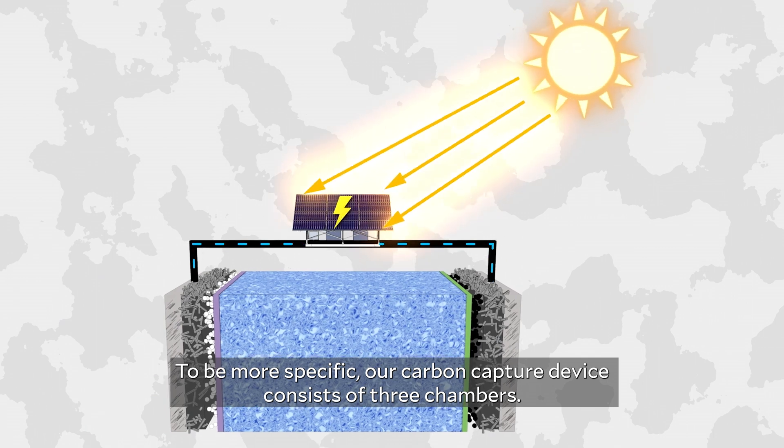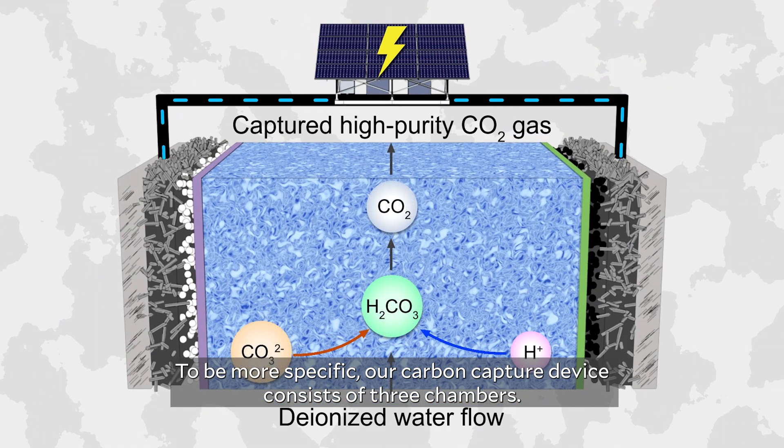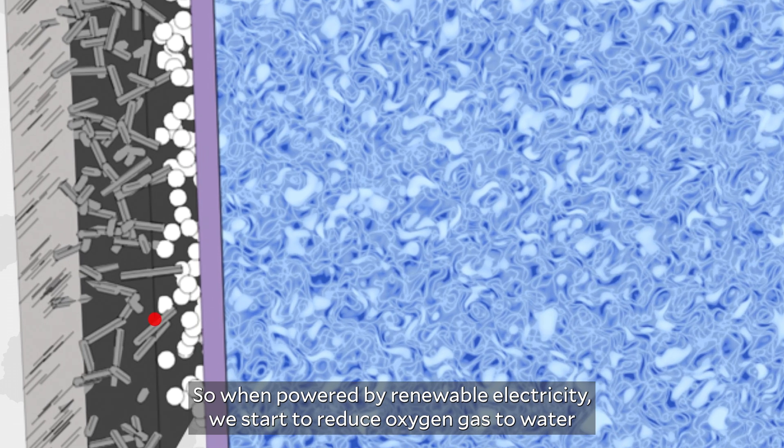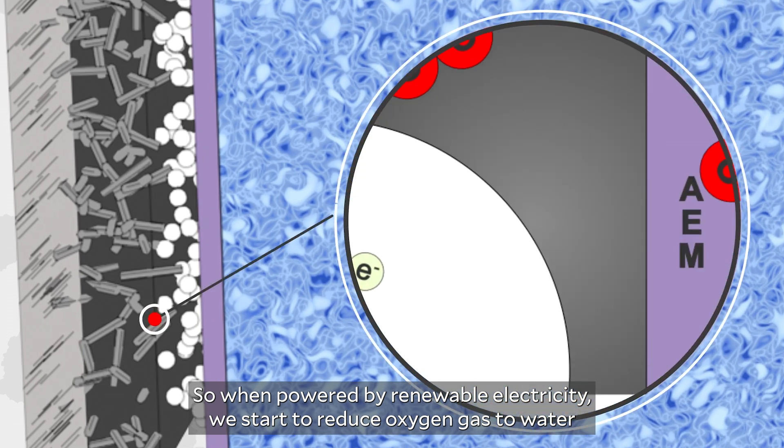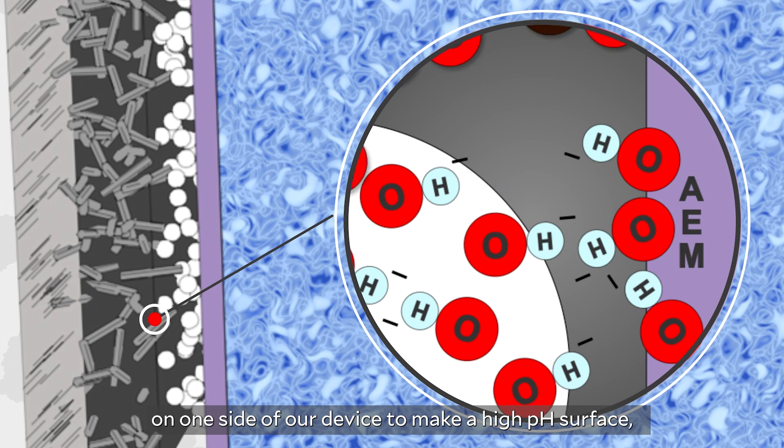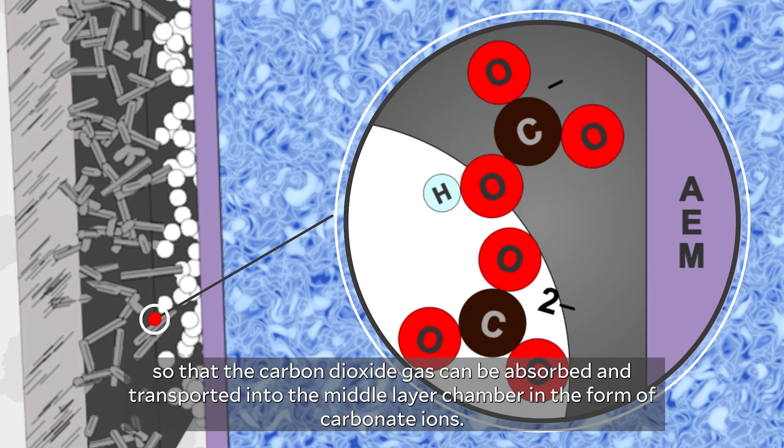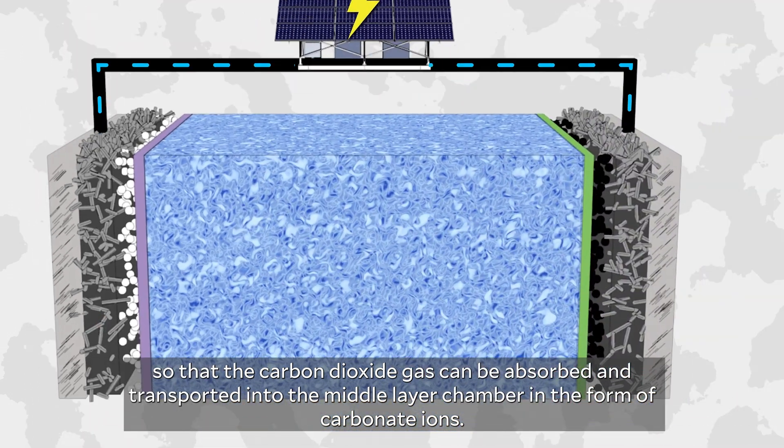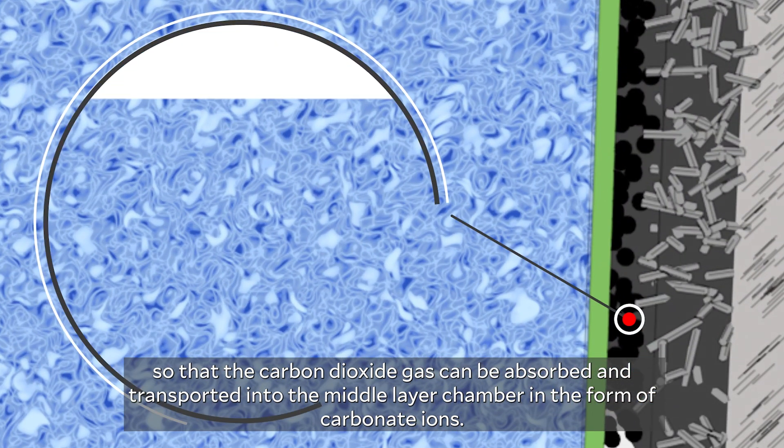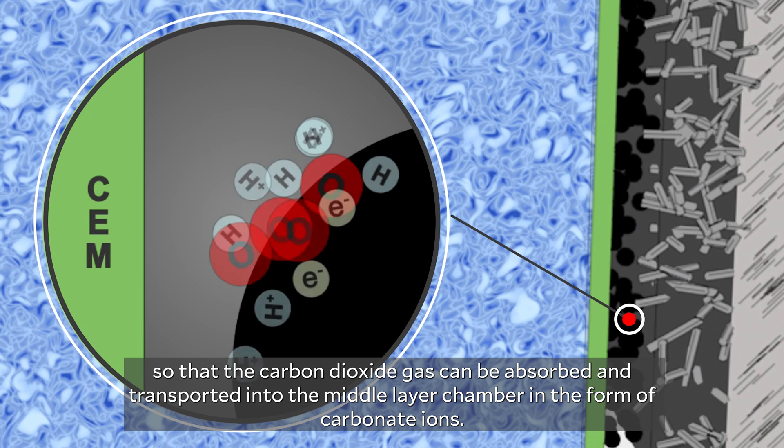To be more specific, our carbon capture device consists of three chambers. When powered by renewable electricity, we start to reduce oxygen gas to water on one side of our device to make a high pH surface, so that the carbon dioxide gas can be absorbed and transported into the middle layer chamber in the form of carbonate ions.